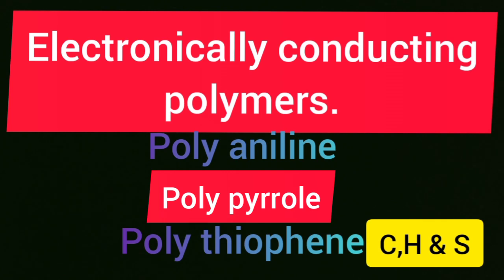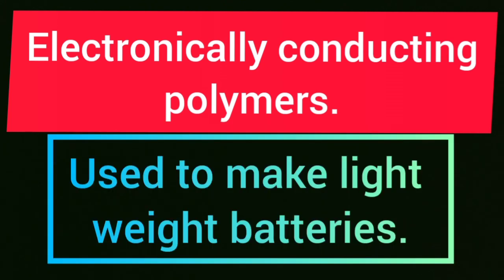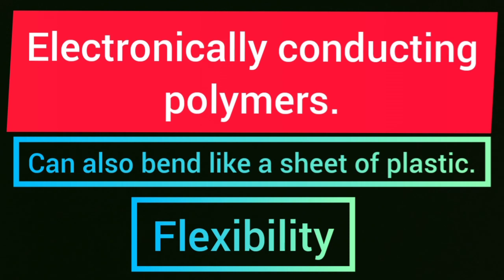These organic polymers are much lighter than normal metals and can be used for making lightweight batteries. They also have the mechanical properties of polymers, such as flexibility, so that one can make flexible electronic devices.